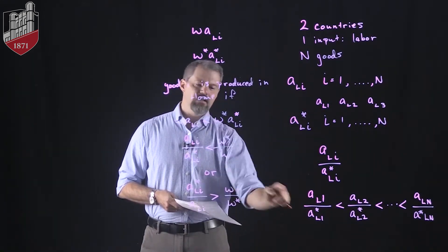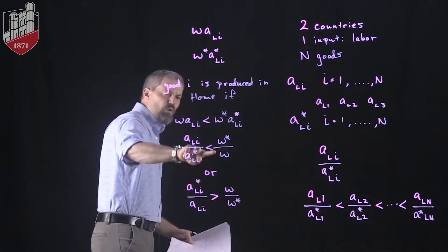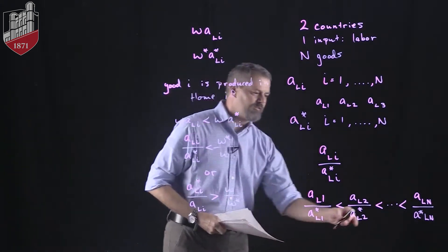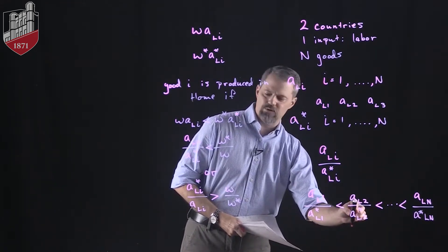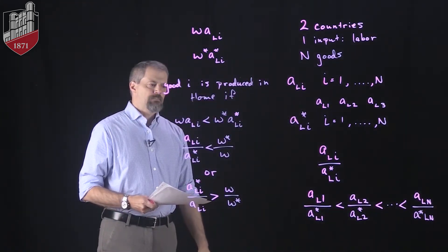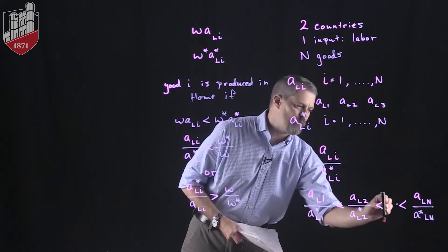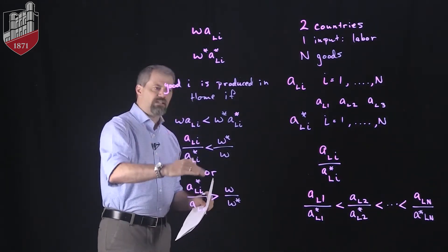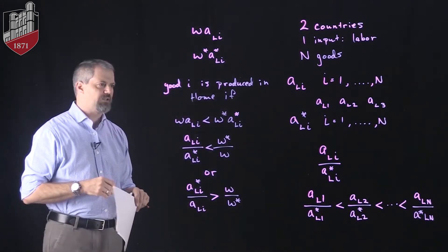All we have to do is find where the relative wage W*/W fits within this ordering of ratios. If the relative wage falls at a certain point in the ordering, all goods to the left of that point are produced at home and all goods to the right are produced in foreign. Let me clear the board and do a quick example — you'll see this is actually much easier than it looks.